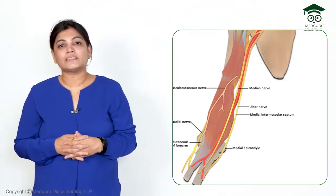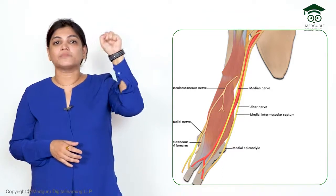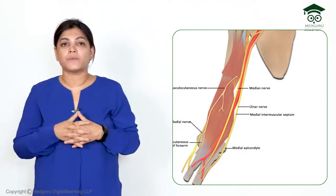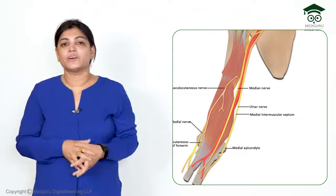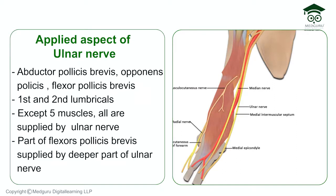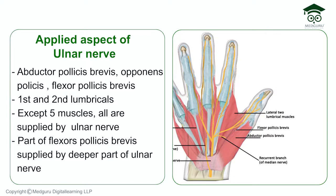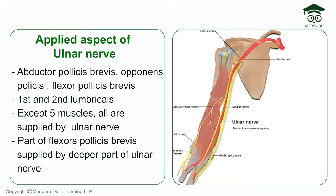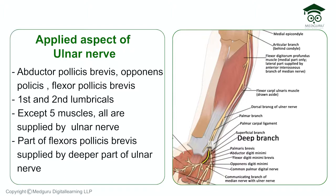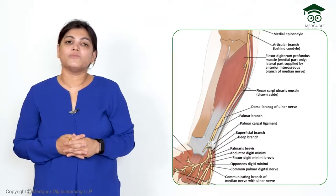The ulnar nerve supplies all the small intrinsic muscles of the hand. Because musicians rely on these small muscles when playing instruments, the ulnar nerve is also called the 'musician's nerve.' In the hand, all muscles are supplied by the ulnar nerve except the thenar muscles (abductor pollicis brevis, opponens pollicis, and flexor pollicis brevis) and the first and second lumbricals. Notably, part of the flexor pollicis brevis is also supplied by the deep branch of the ulnar nerve, making it an example of a hybrid nerve supply.